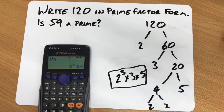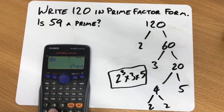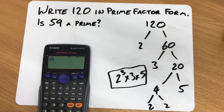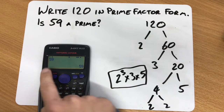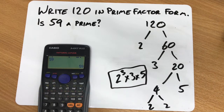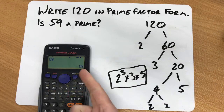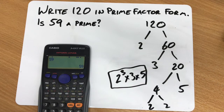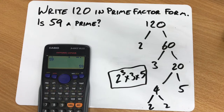Now we can use this technique to determine whether a number is prime or not. If I type in 59 and press equals and then do SHIFT Factorize, nothing happens — indicating that this must already be in prime factor form, so therefore it is a prime.